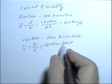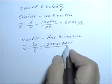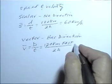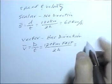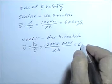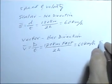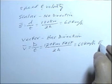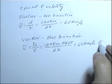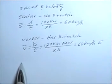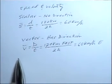that displacement a direction. In a time of two hours, that gives us a velocity of 60 kilometers per hour east. So the difference between speed and velocity is simply that